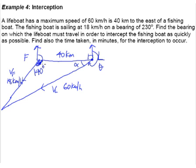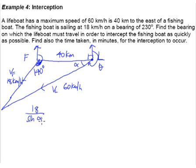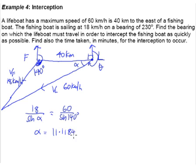We look around the picture. We always look for the sine rule, because it's not a right-angle triangle. We have 140 degrees with opposite side 60 km/h, and alpha degrees with opposite side 18 km/h. So: 18 over sine alpha equals 60 over sine 140 degrees. Cross-multiplying and using the calculator, we get alpha equals 11.1184 degrees.